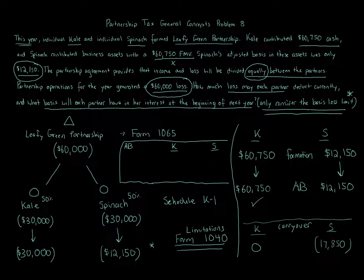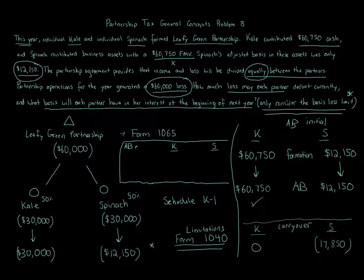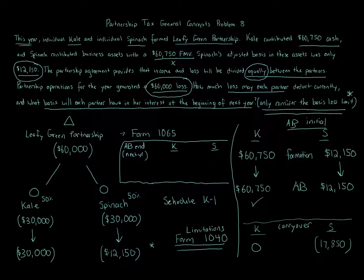Let's start with Spinach — it's easy. Spinach had a $12,150 basis. The rule is that basis is reduced by the amount of loss that can be taken. Since $12,150 was utilized on Spinach's Form 1040, that reduces Spinach's basis down to zero. So Spinach's adjusted basis initially was $12,150, the full $12,150 was used as a loss, and now Spinach has a zero basis at the beginning of next year.